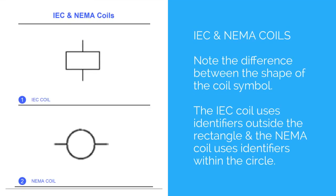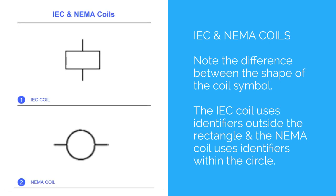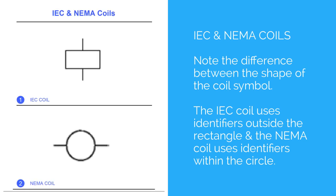IEC and NEMA coils: note the difference between the shape of the coil symbol. The IEC coil uses identifiers outside the rectangle and the NEMA coil uses identifiers within the circle.